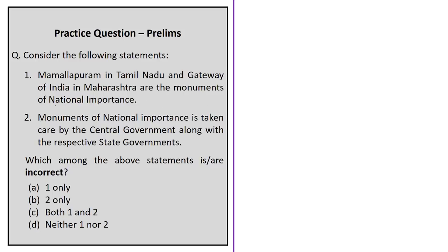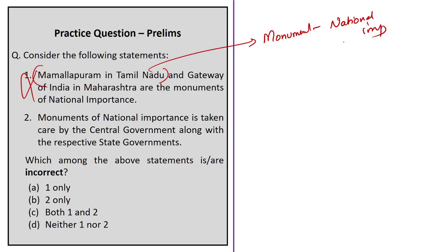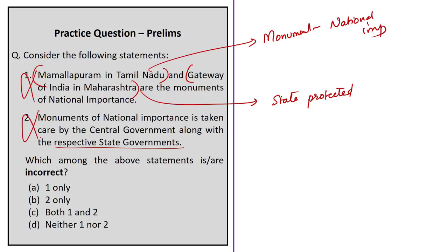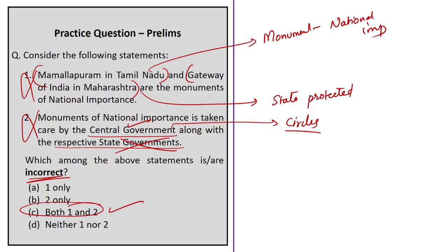The second statement — that the southern slopes are steeper than northern slopes and have thick vegetation — is also correct. Since the rate of convergence is not uniform, the Himalayas are asymmetrical fold mountains: southern slopes are steeper and northern slopes are gentle. The southern slopes receive higher insolation and therefore have thick vegetation, while the northern slopes have sparse vegetation. The correct answer is option D — statements 1, 2, and 3 are all correct.